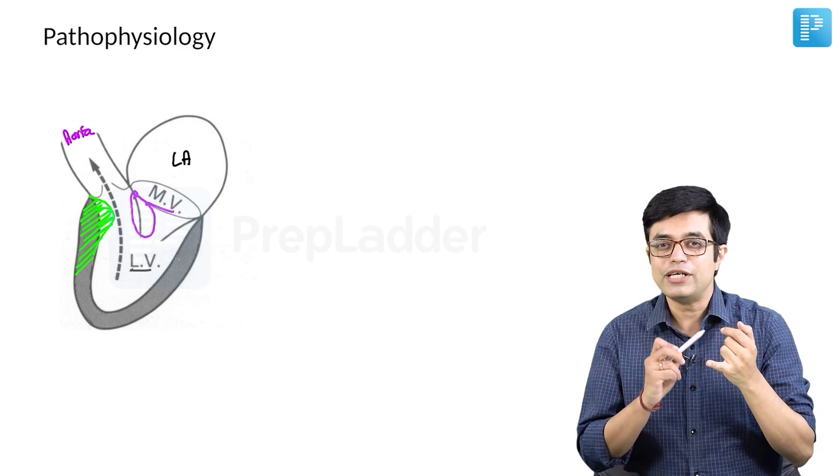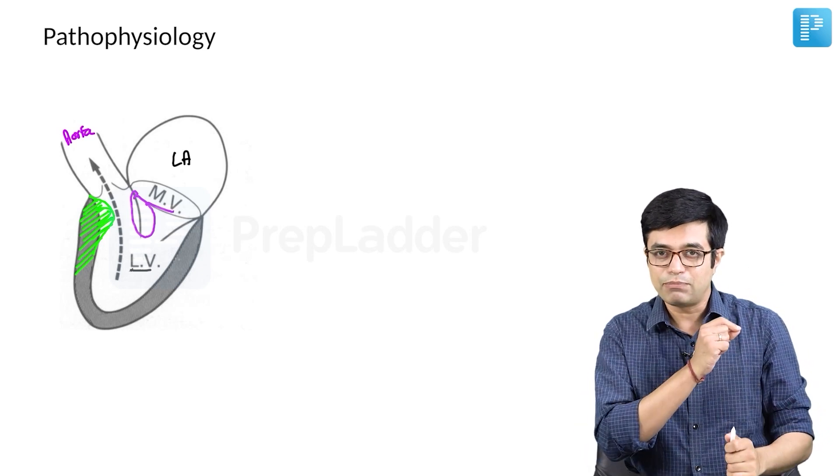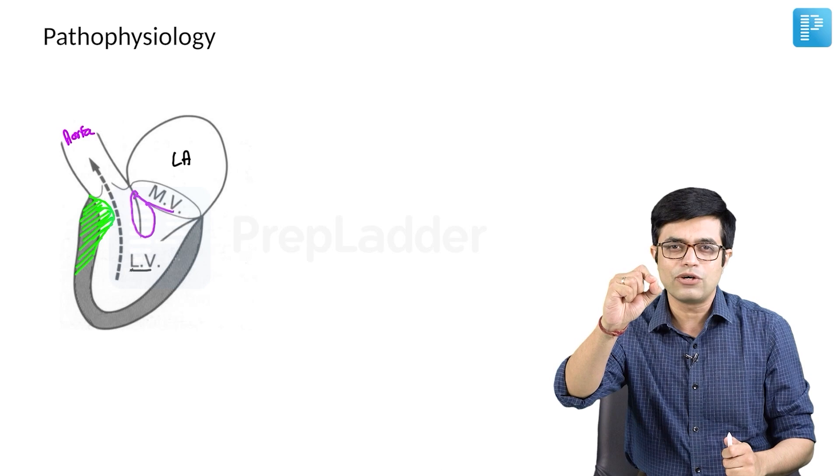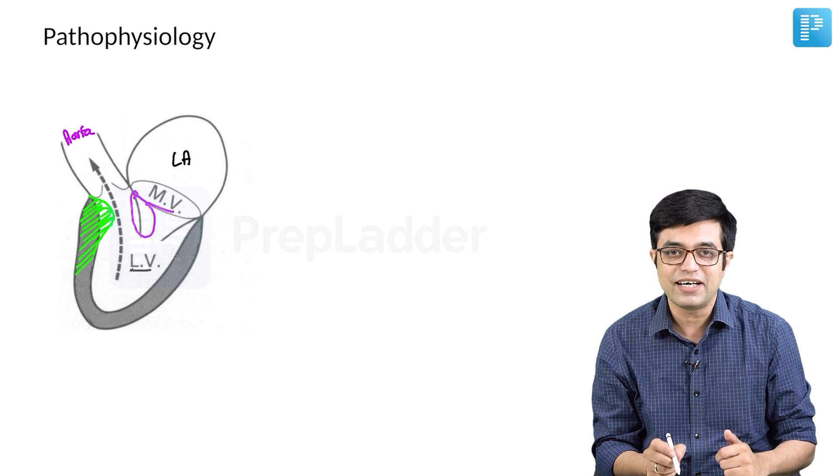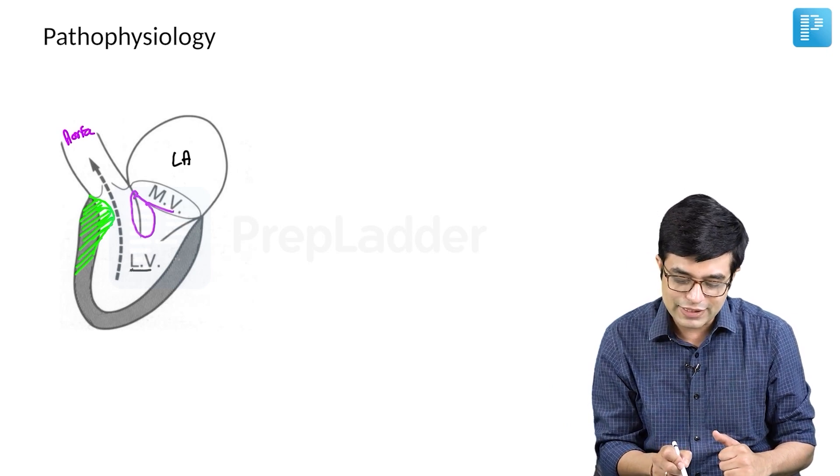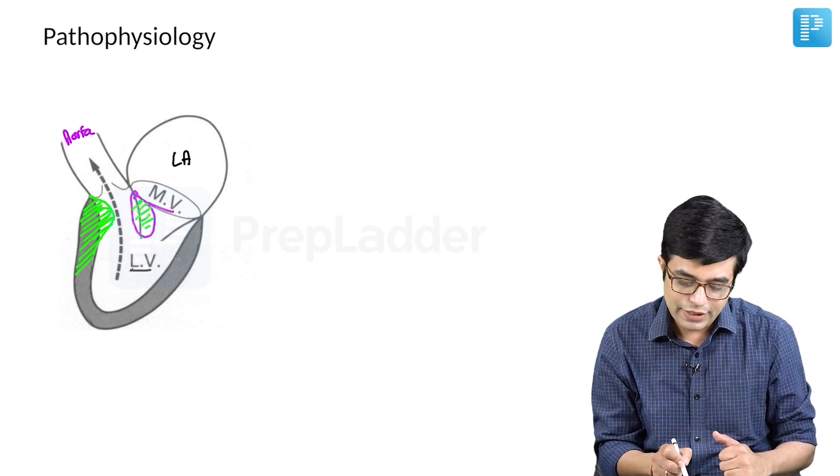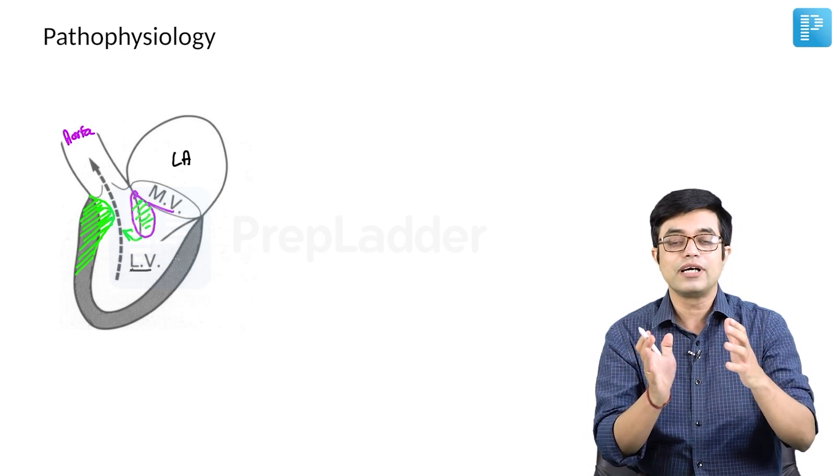At the same time, Venturi effect says, whenever it will flow through a narrow area, there will be a low pressure area created there. And this low pressure area causes displacement of this mitral valve into this area producing a complete obstruction.